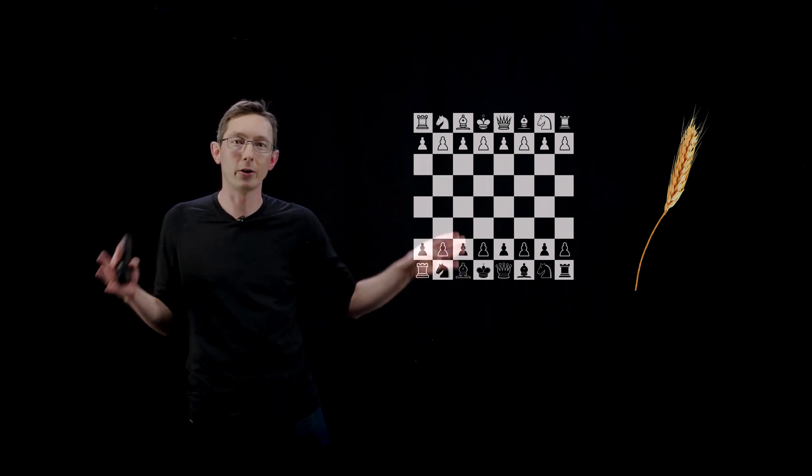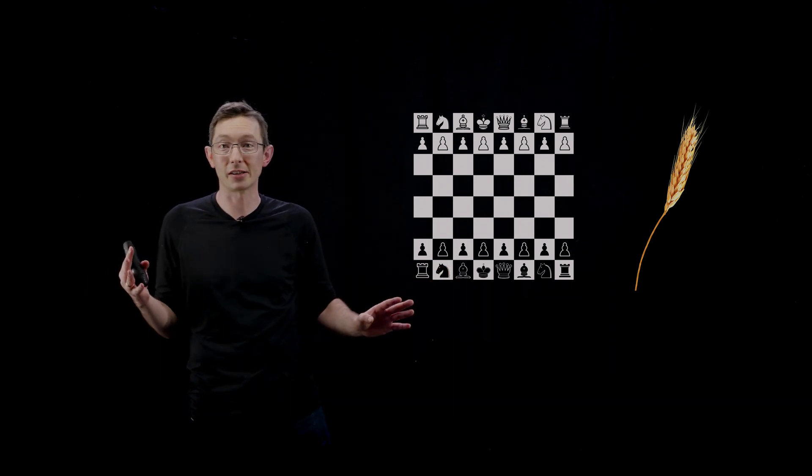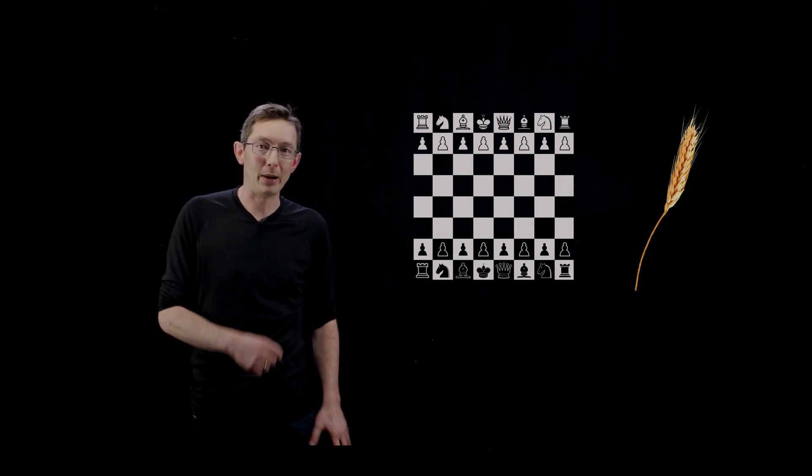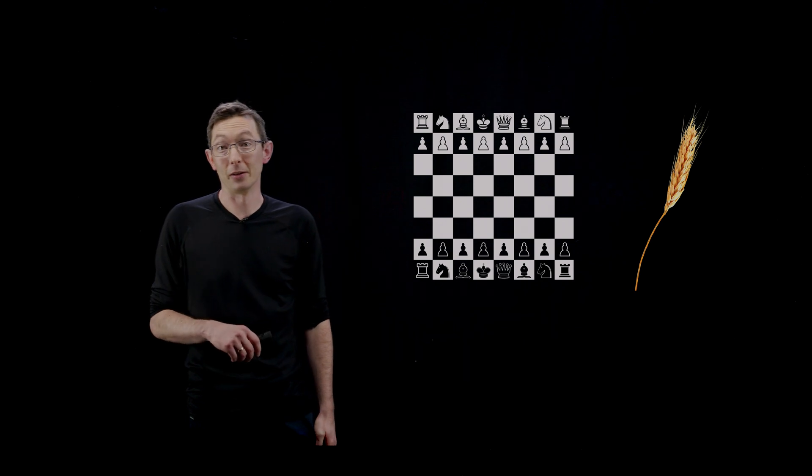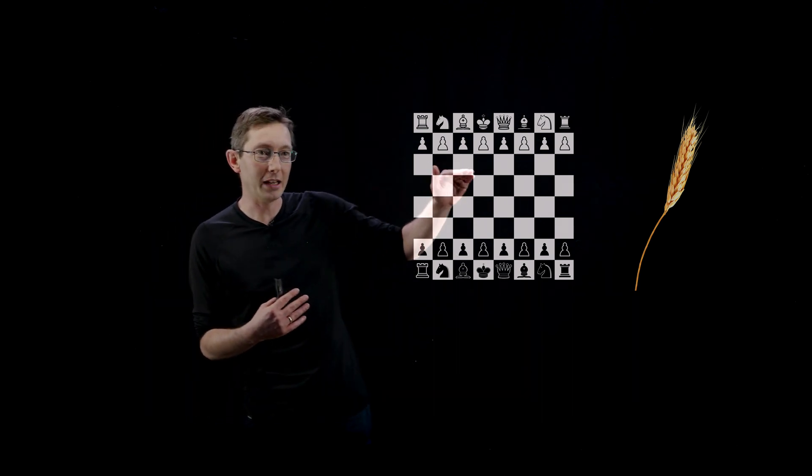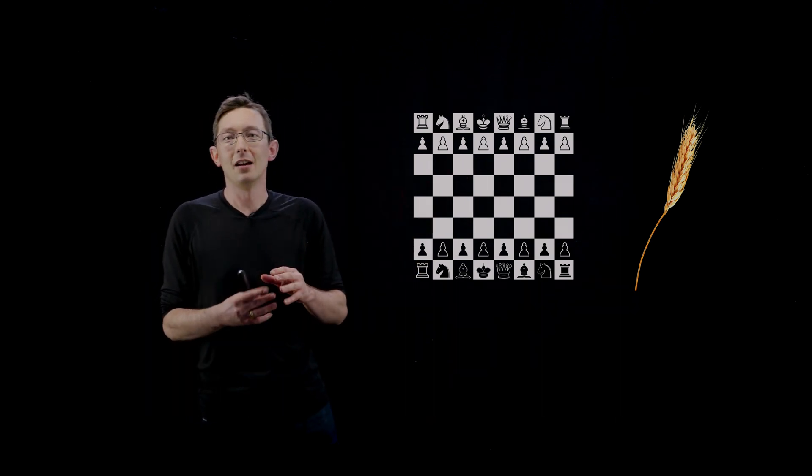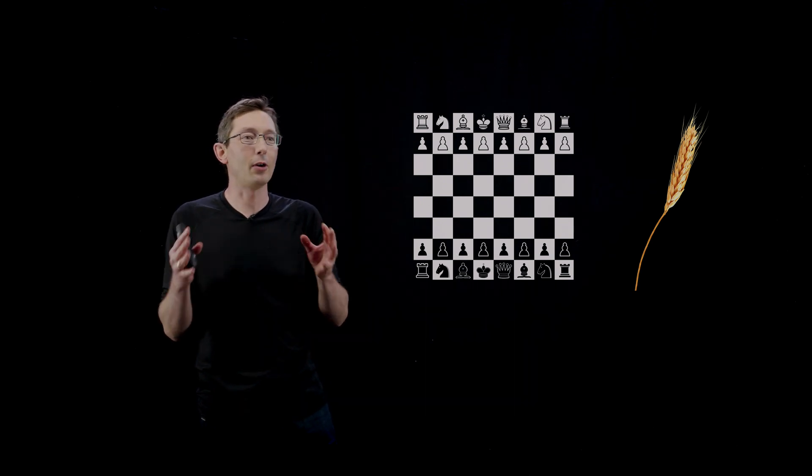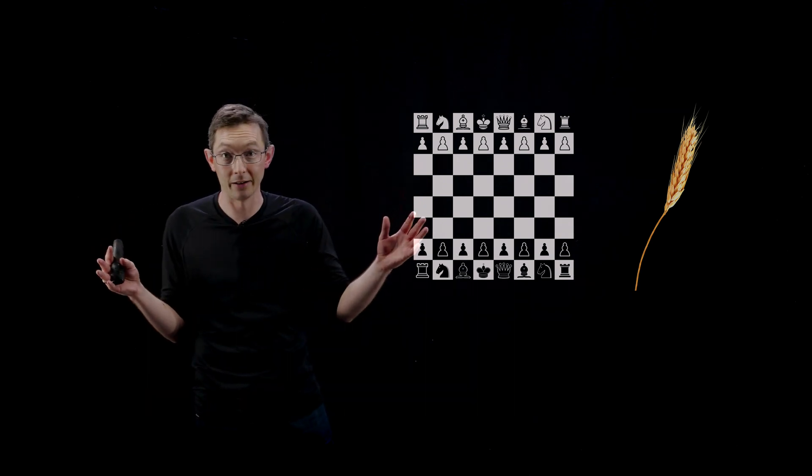And it was only weeks later when the king was told that all of the grain areas were empty and the kingdom was going to starve and that they couldn't pay the inventor that they realized something was wrong. After 20 or 30 of these squares, you get more grains of wheat than there are in an entire kingdom.